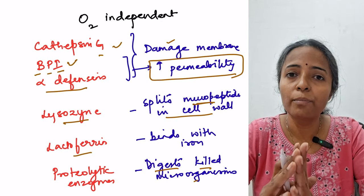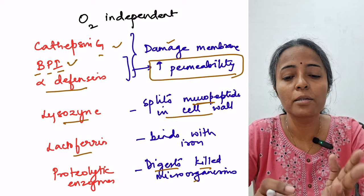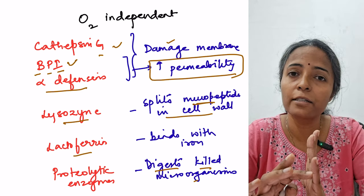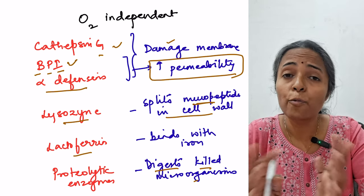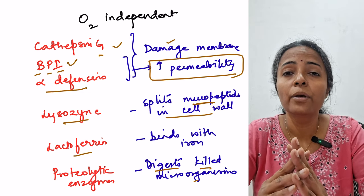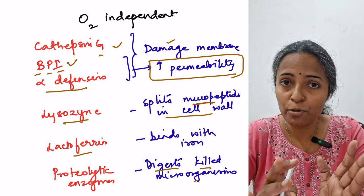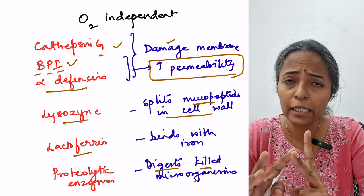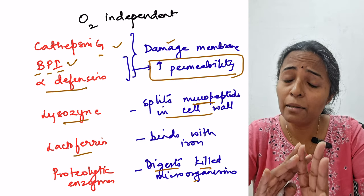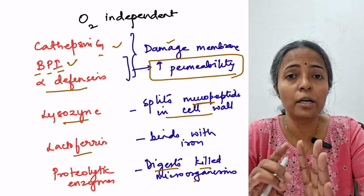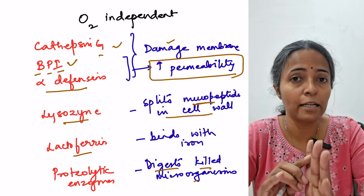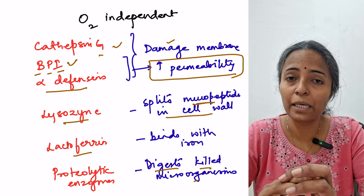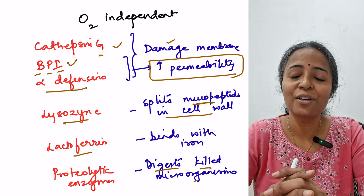That covers phagocytosis. We discussed its definition, the professional phagocytes — neutrophils and macrophages — and the differences between them. We covered the three steps of phagocytosis in detail, and the killing mechanisms including ROS, reactive nitrogen intermediates, and oxygen-independent mechanisms.